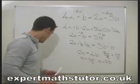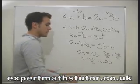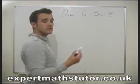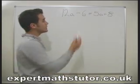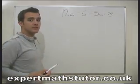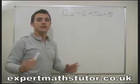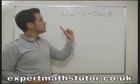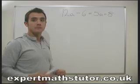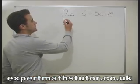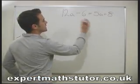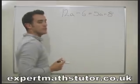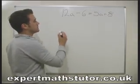We'll do another one just for practice. This time we don't have any b's, just numbers, so we're going to find an actual value for a. Instead of saying 'make a the subject,' we're told to find what a must equal. So same thing again — let's get all the a's on the left-hand side and all the numbers on the right-hand side.